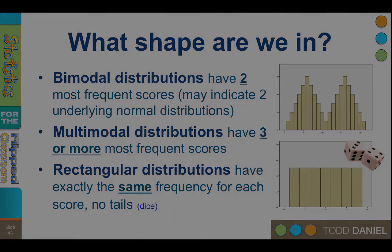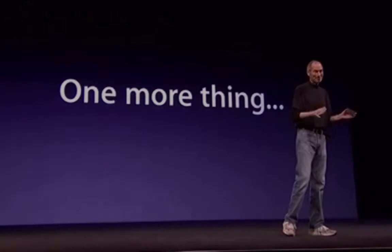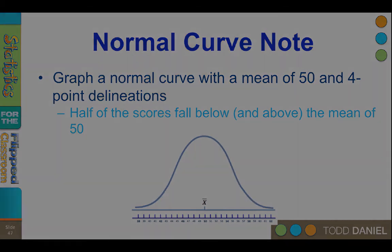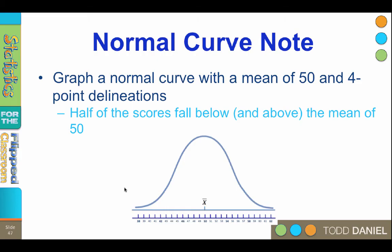Before we conclude, there is one more thing that I want to tell you about the normal curve, and that is that the normal curve can be overlaid with a number line, and this is where things get really interesting and quite useful. If we have a normal curve, we can add the value of the mean right in the middle where it belongs, and in this example we're going to imagine that our mean is 50.